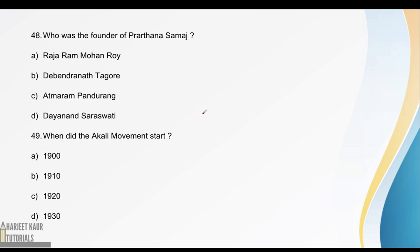Next: who was the founder of Prarthna Samaj? Prarthna Samaj was founded in 1867. Their aim was that people believe in God only — belief in one God was their core principle.